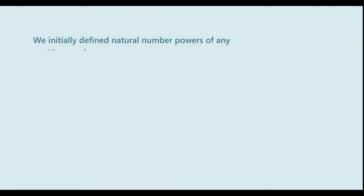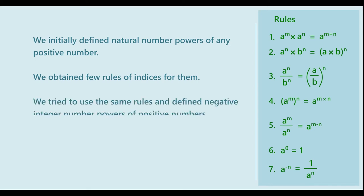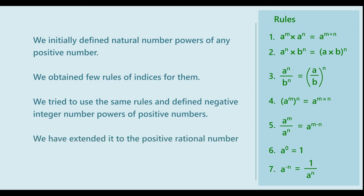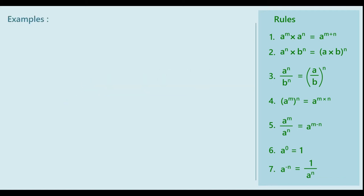Hello. We initially defined natural number powers of any positive number, which was simple, and obtained a few rules of indices for them. Then we tried to use the same rules to define negative integer number powers of positive numbers. We extended it to positive rational number powers. Now let us try to extend it to negative rational number powers. For this, let us begin with an example.